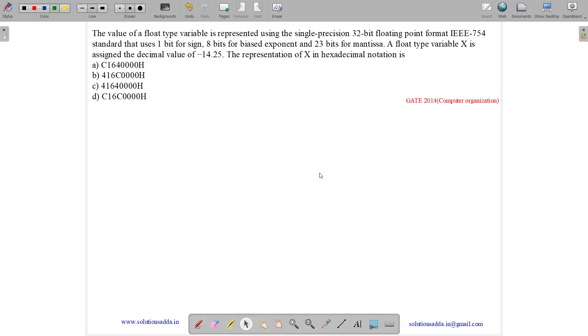This question belongs to computer organization subject and was asked in GATE CSE 2014 set 2. The question states, the value of a float type variable is represented using single precision 32-bit floating point format IEEE 754 standard.